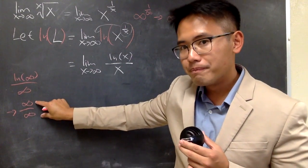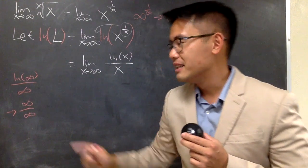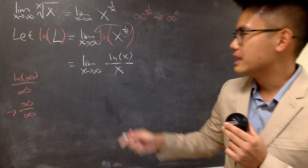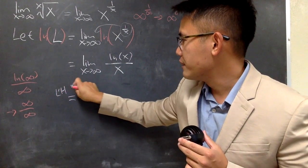Well, here, infinity over infinity, even though this is an indeterminate form, but this is L'Hôpital's rule ready form, right? So, I will just be using L'Hôpital because we have infinity over infinity.